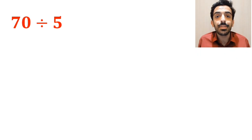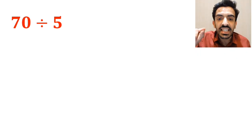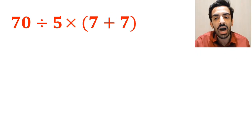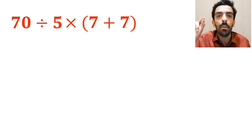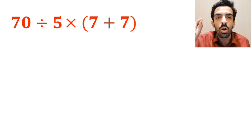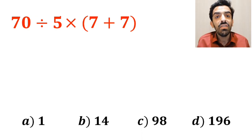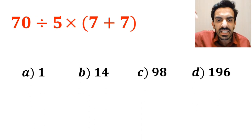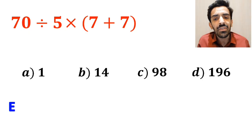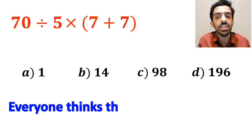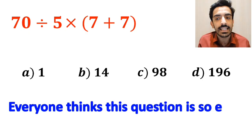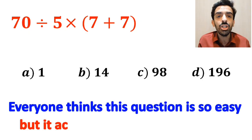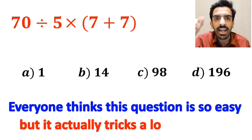What is the value of the expression 70 divided by 5 times open parenthesis 7 plus 7 close parenthesis? Which option do you think is the correct answer to this question? Everyone thinks this question is so easy, but it actually tricks a lot of people.